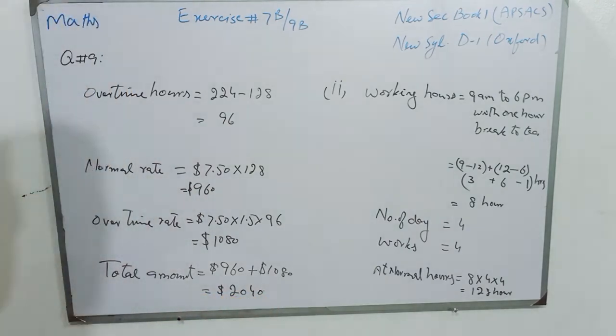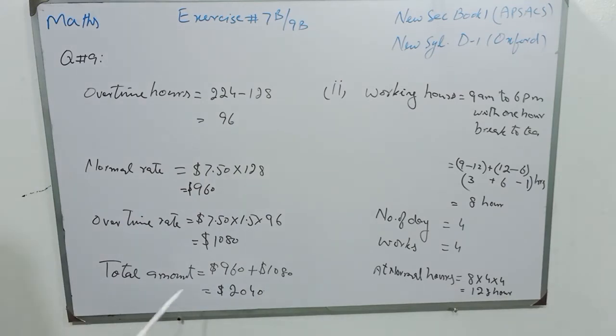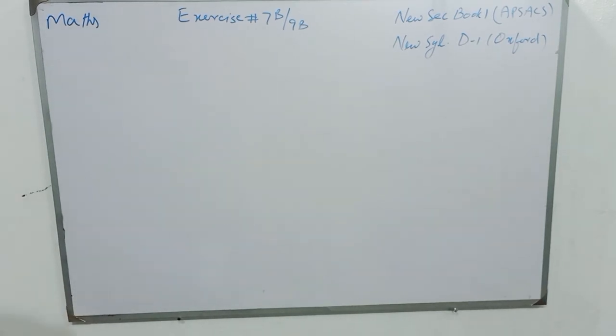So if the project has to be completed in 4 days with 4 workers, the total amount will be $2,040.